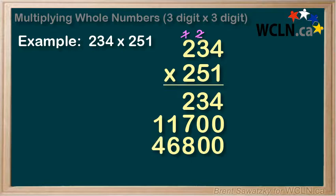So at this point, we have three answers. The first line is for 234 times 1. The second line is for 234 times 50. And the third line is for 234 times 200.